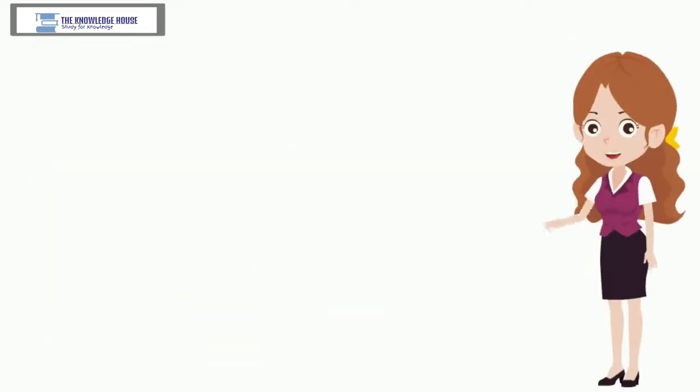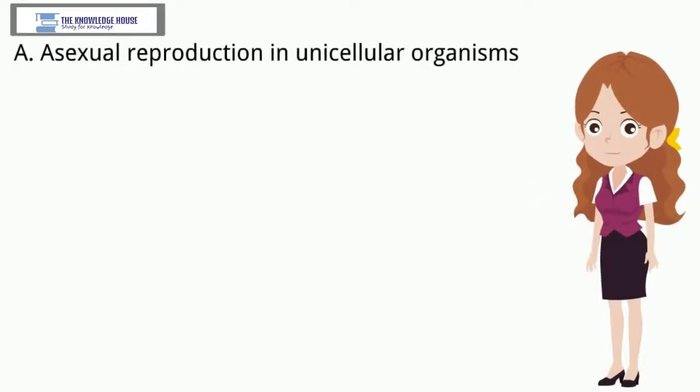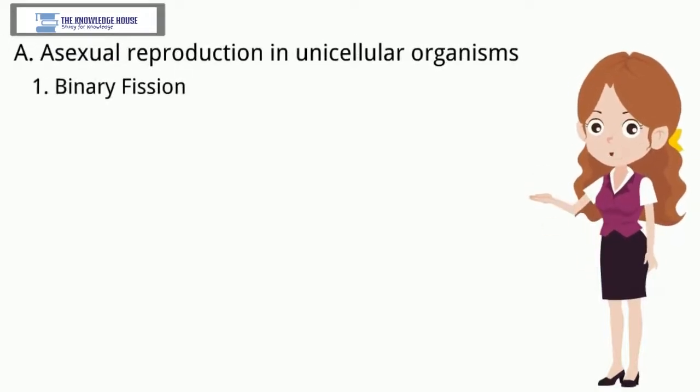A. Asexual Reproduction in unicellular organisms. 1. Binary fission. Try this.